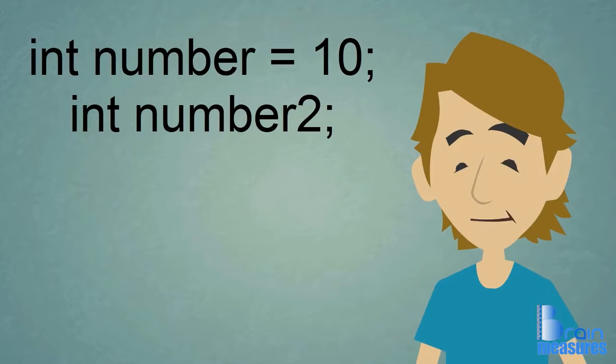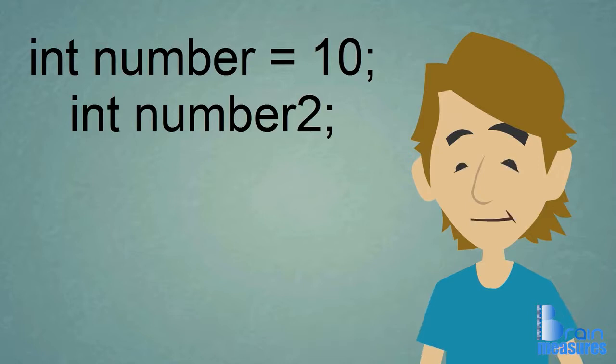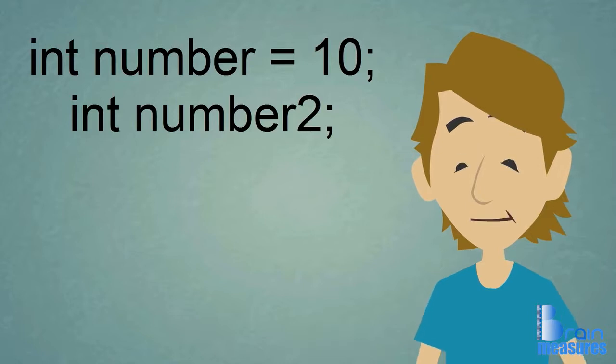The variable number is set to 10 because it has an equal sign and then the number 10. Number 2, which is the second variable, is not equal to 10 because it doesn't have an equal sign. Numbers that don't have an equal sign are just equal to zero.